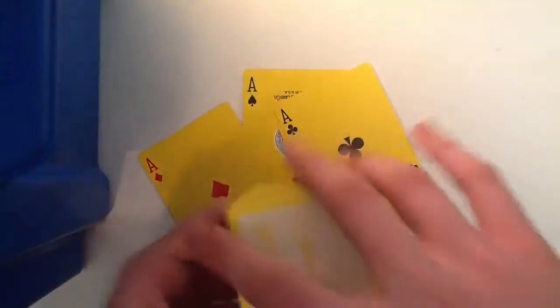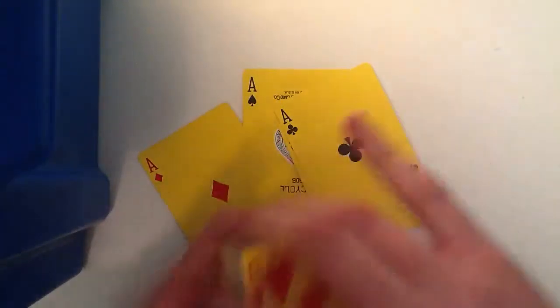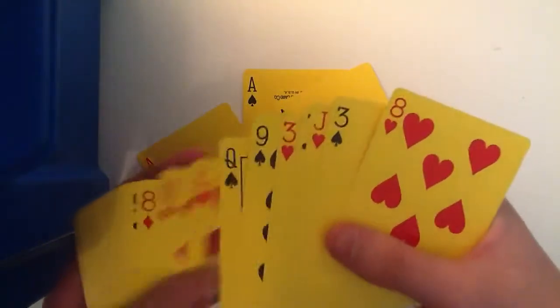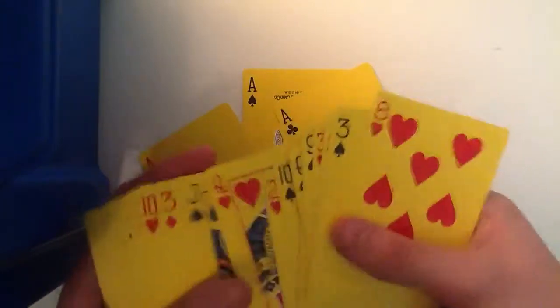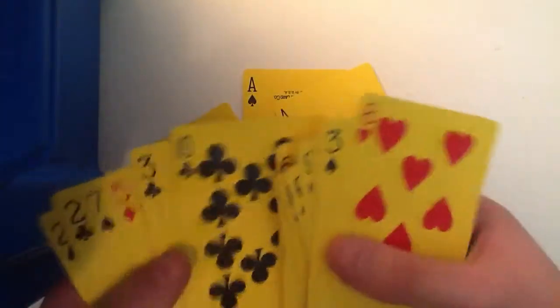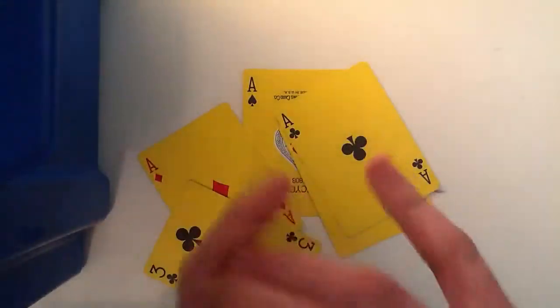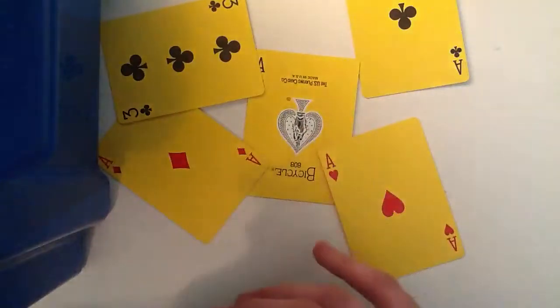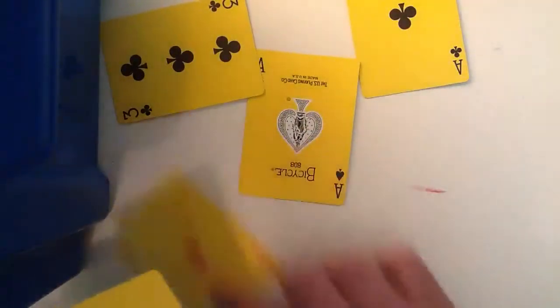So once you've got all the Aces, you're also going to need the three of clubs. The order I usually do them in, but you can find your own little order. I always go hearts, then diamonds, then spades, and then clubs, then you want the three of clubs there.